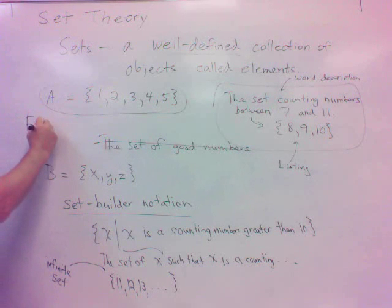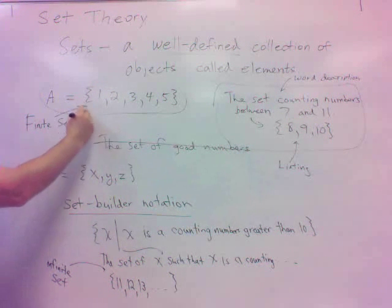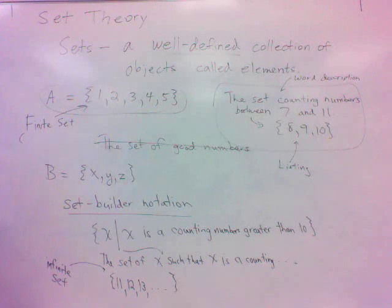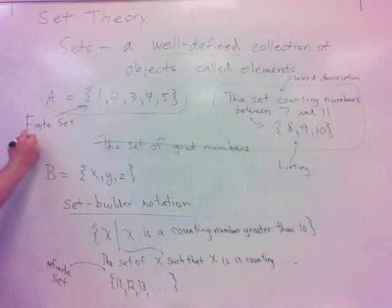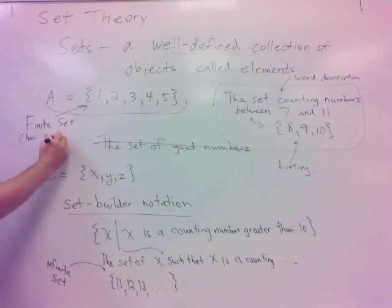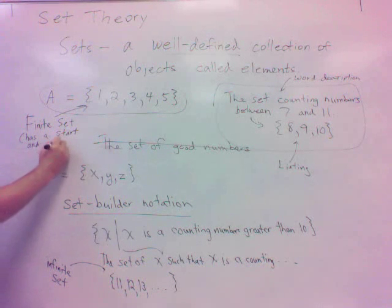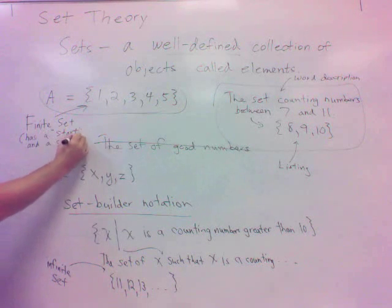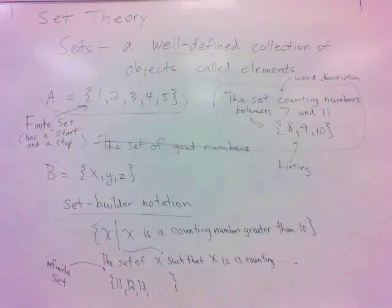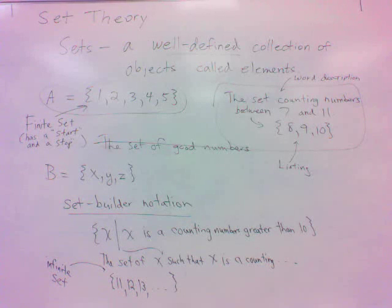Now, the other sets I have up here, for example, this one, not so much infinite here, and so there's another term associated with those, those that have a start and a stopping point. Those are called finite sets. So a finite set is a set that has a starting point and an ending point. Infinite sets may have a starting point and don't have an ending point, or may not have either one. They may go out infinitely both ways, but a finite set has both the start and a stopping point.